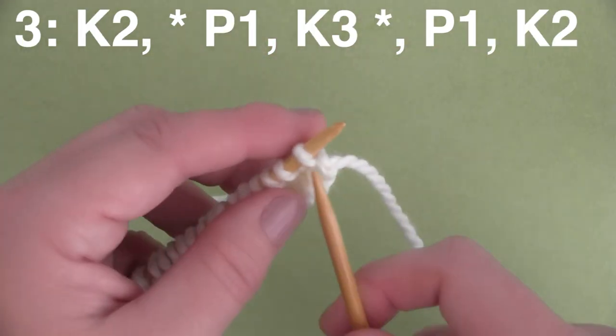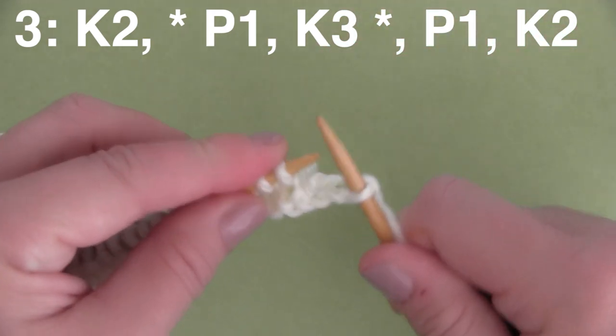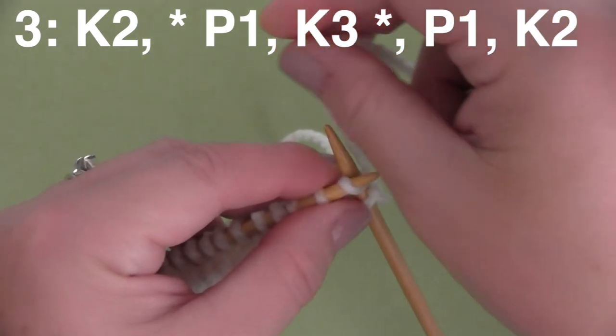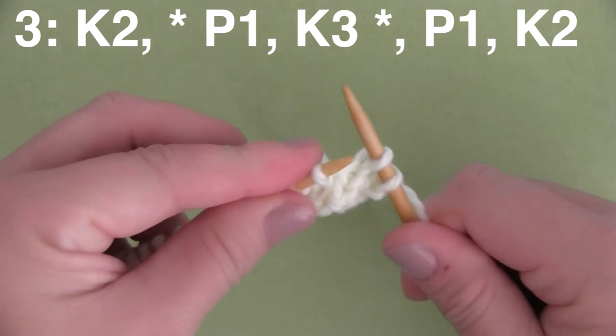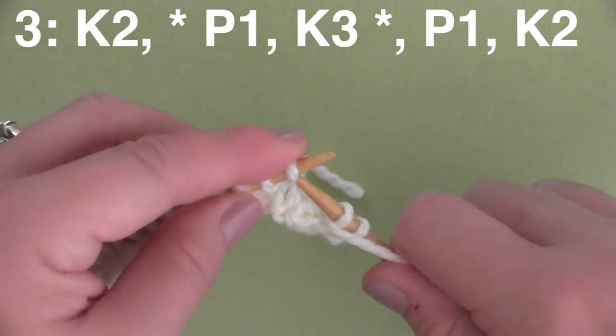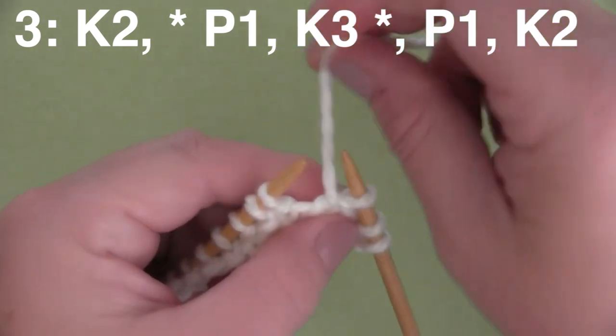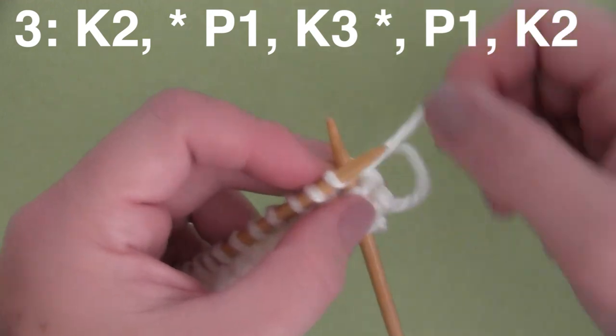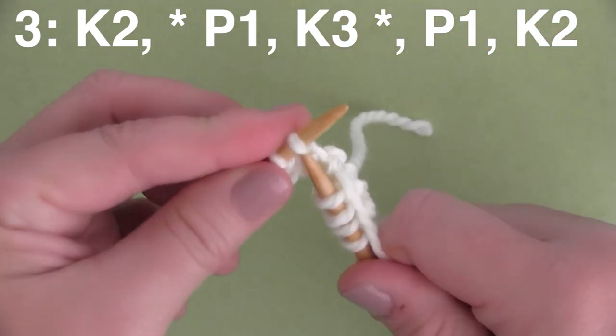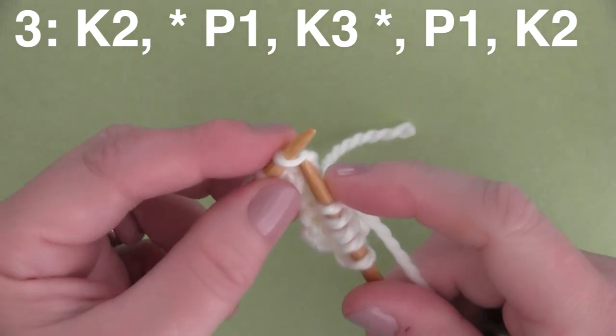Row 3, we begin with knitting 2 stitches. So it's 1 and 2, and then the pattern between the asterisks, that's the repeat. And it's P1, K3. So we bring our yarn to the front for 1 purl stitch, that's P1. Our yarn to the back, and it's knitting 3 stitches. So this P1, K3, we are going to keep repeating that pattern all the way down the row.